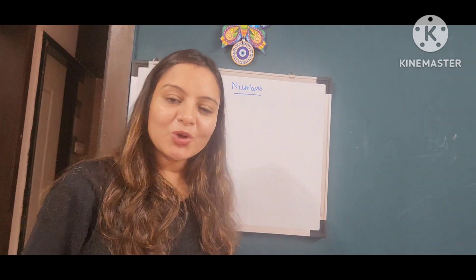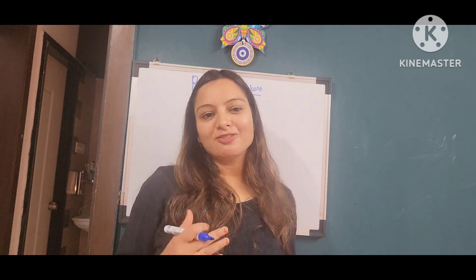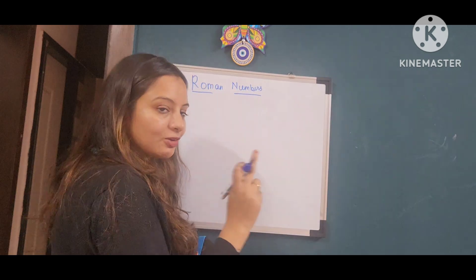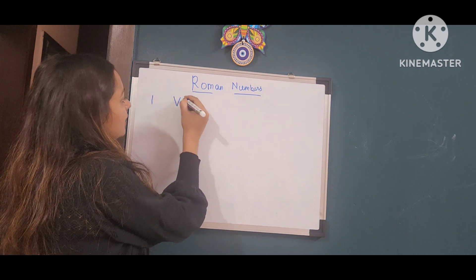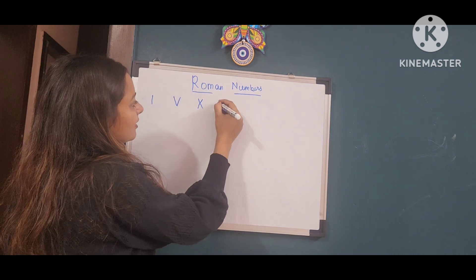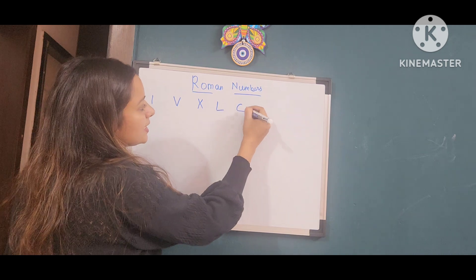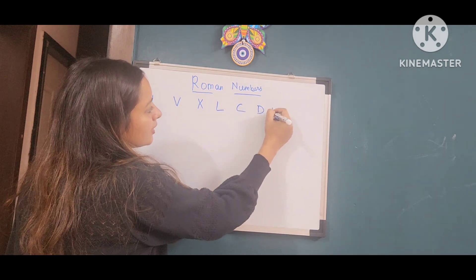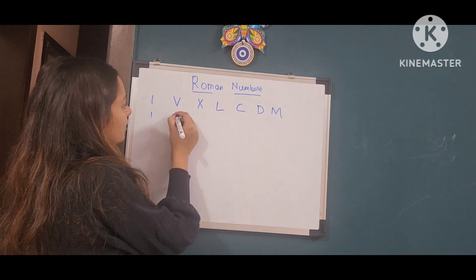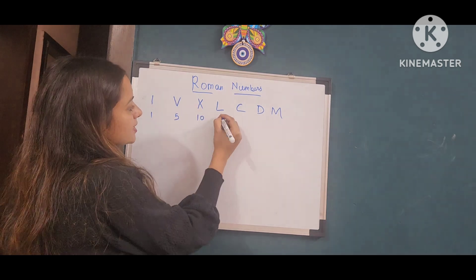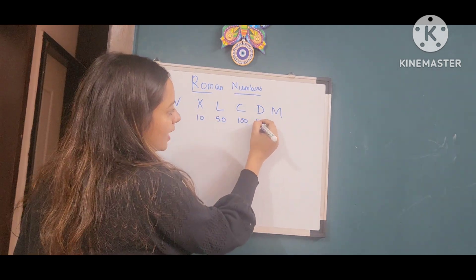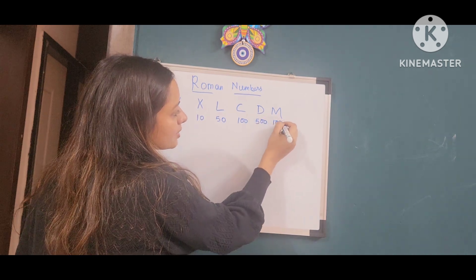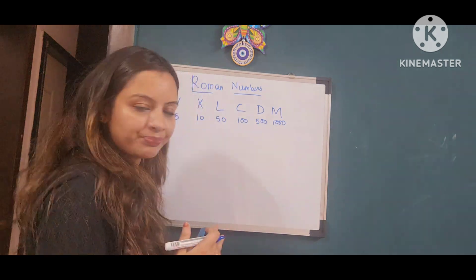If you remember Roman numbers, I will tell you some important alphabets. I will write it for your reference: I is for number 1, V is 5, X is 10, L is 50, C is 100, D is 500, M is 1000. Using all these letters, we make numbers.